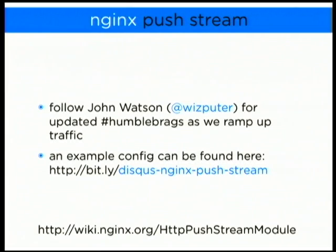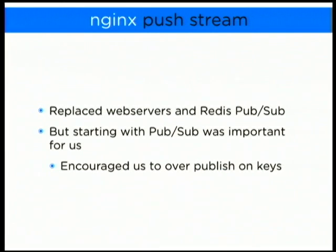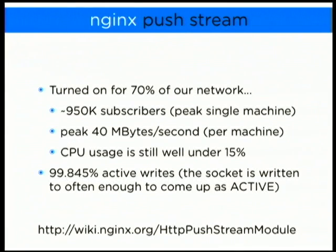The magic that got us down to five servers is the Nginx push stream module. One of our devops guys loves to humble-brag about how awesome our Nginx clusters are — follow him on Twitter and you'll constantly hear our concurrent user counts. We recently hit two million concurrent users on this setup. It's currently turned on for 70% of our live network and this week we're ramping to 100%. We've seen peaks of 950,000 subscribers per single machine — that was an accident from a DNS routing error sending everything to one machine, but it stayed up.